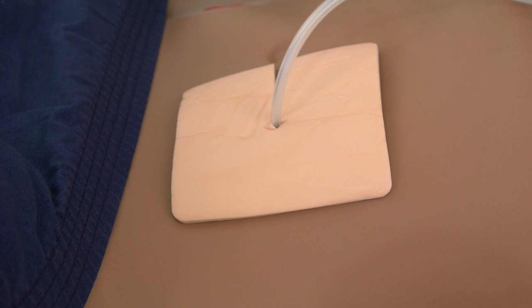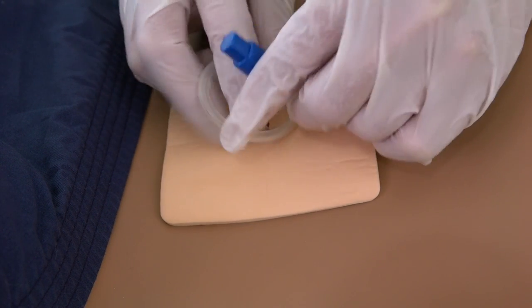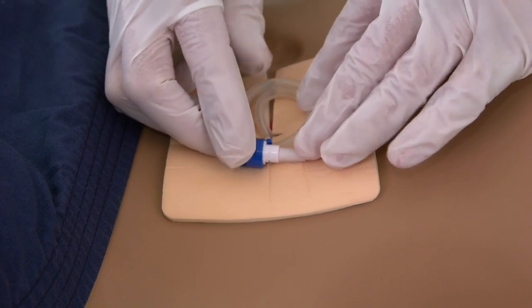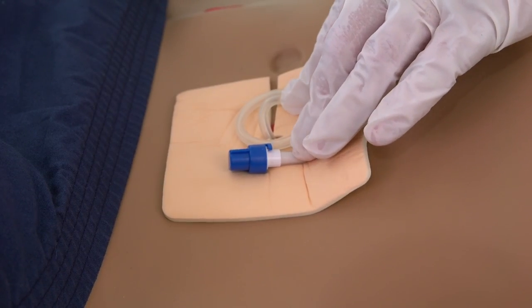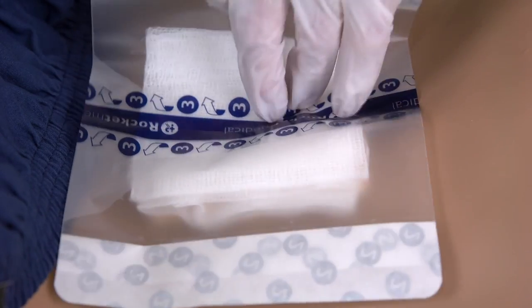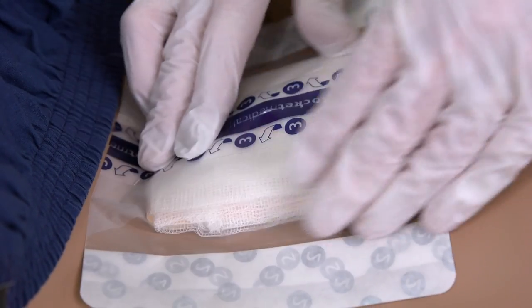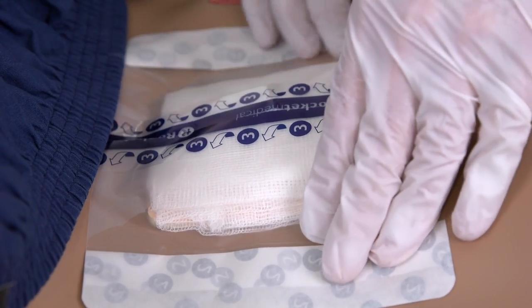Coil the catheter carefully into loops and place over the foam. Place the Seaview dressing centrally, sticky side down, covering the catheter with the gauze squares. Ensure the clear dressing overlaps the foam square on all sides. Press down firmly.